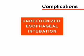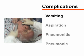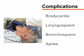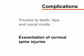The most serious complication of endotracheal intubation is unrecognized esophageal intubation, which may lead to hypoxemia, hypercapnia, and death. Laryngoscopy can provoke vomiting and aspiration of gastric contents, causing pneumonitis or pneumonia. Additional complications include bradycardia, laryngospasm, bronchospasm, and apnea due to pharyngeal stimulation. Trauma to teeth, lips, vocal cords, and exacerbation of cervical spine injuries can also occur.